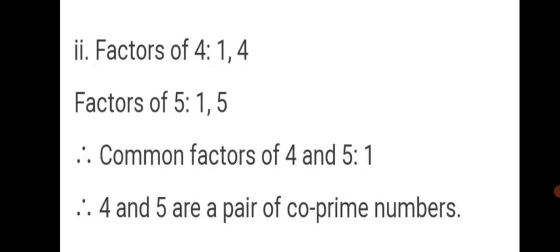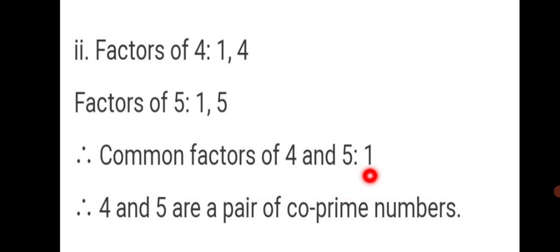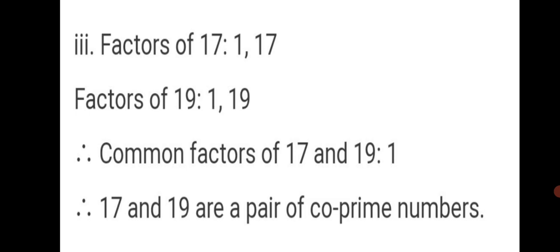For 4 and 5: factors of 4 are 1, 2 and 4; factors of 5 are 1 and 5. The common factor of 4 and 5 is only 1, so 4 and 5 are a pair of co-prime numbers. Next, for 17 and 19: factors of 17 are 1 and 17; factors of 19 are 1 and 19. Common factor is only 1, so 17 and 19 are a pair of co-prime numbers.